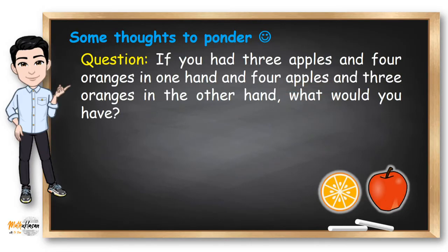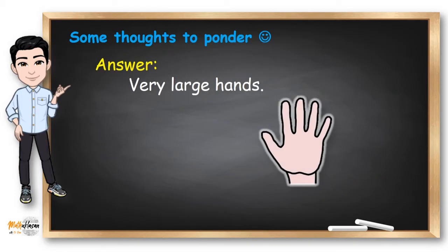Next, if you had three apples and four oranges in one hand and four apples and three oranges in the other hand, what would you have? Very large hands.